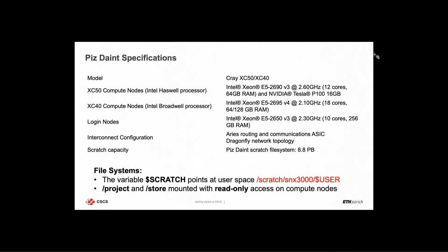The flagship system available in the user lab is Piz Daint, a Cray hybrid system featuring both XC50 and XC40 nodes. The XC50 nodes feature an Intel Haswell processor and an NVIDIA Tesla P100 GPU. The XC40 compute nodes feature two Intel Broadwell processors. Login nodes have large memory for compiling code. The interconnect uses Aries routing with a Dragonfly network topology. Scratch capacity for Piz Daint is 8.8 petabytes.